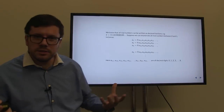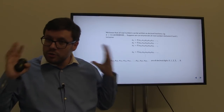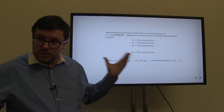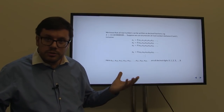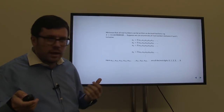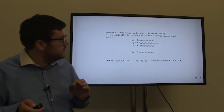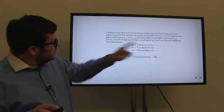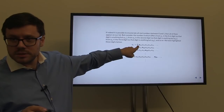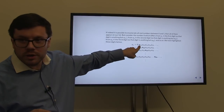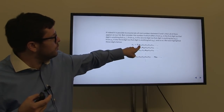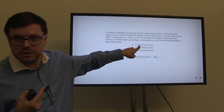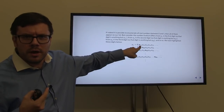Suppose I've listed and enumerated all real numbers. But now consider this number b that I'm going to construct. Let us look at the first digit a₁₁ of the first number on our list — say it's 2. For the first digit of b, I'm going to pick something different than a₁₁. So if a₁₁ is 2, I take 3, for example.